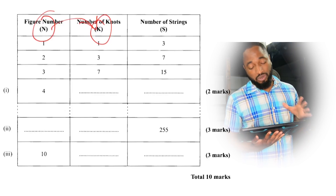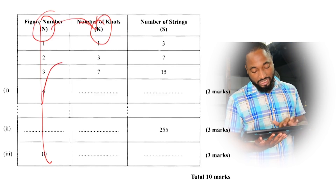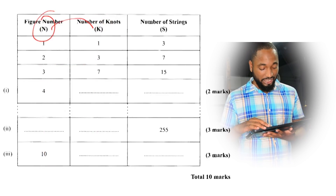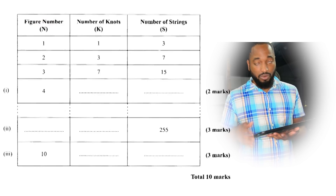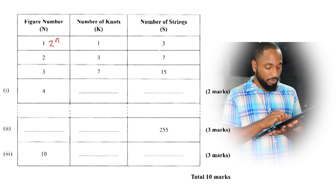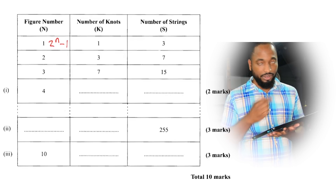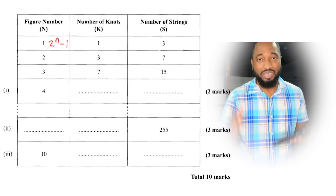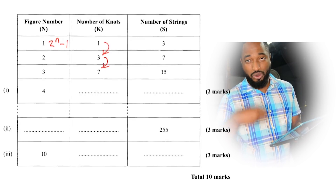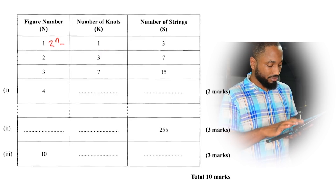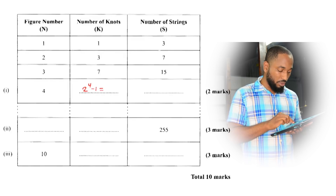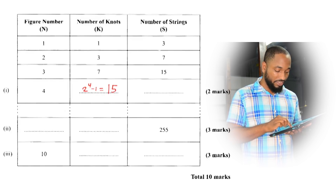Once you find that relationship, you have already solved the question. The real trick in the investigation question is to find the relationship between the n column and the other column — number of nuts, number of strings, whatever they give you. We found the relationship to be two to the power of n, take away one. I know it's going to have a power because it keeps going up exponentially. Two to the power of four take away one is 16 take away one, which is 15.